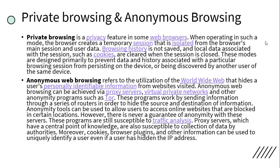Anonymous web browsing refers to the utilization of the world wide web that hides a user's personally identifiable information from websites visited. Anonymous web browsing can be achieved via proxy servers, virtual private networks, and anonymity programs such as Tor. These programs work by sending information through a series of routers in order to hide the source and destination of the information.